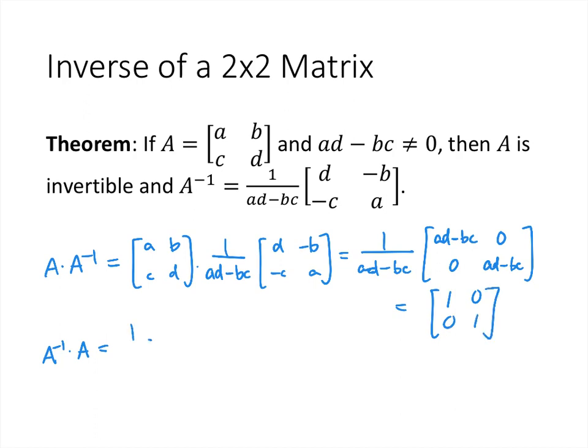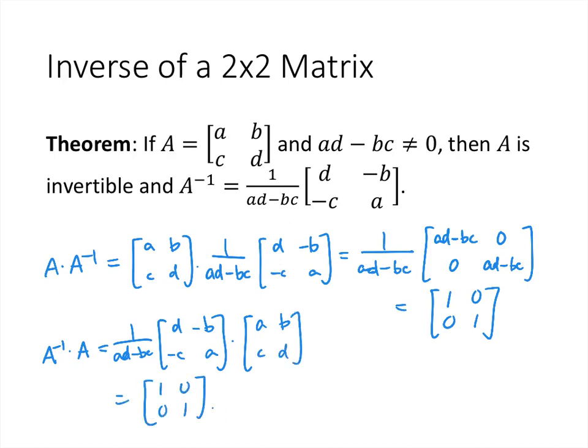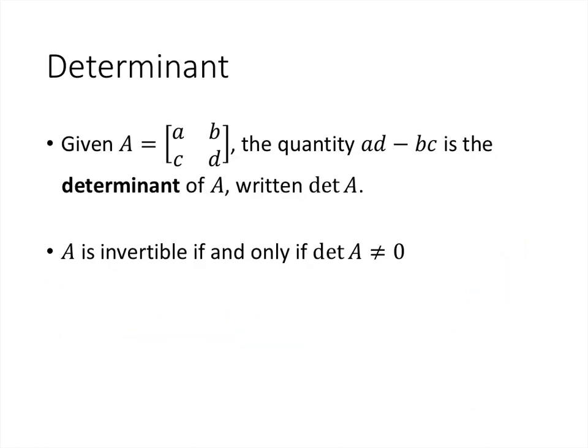Similarly, multiplying the matrices in the other order also gives the identity. This number AD minus BC is called the determinant of A — it determines whether A is invertible or singular. If AD minus BC is not 0, then A is invertible. If AD minus BC is 0, then A is singular and doesn't have an inverse.